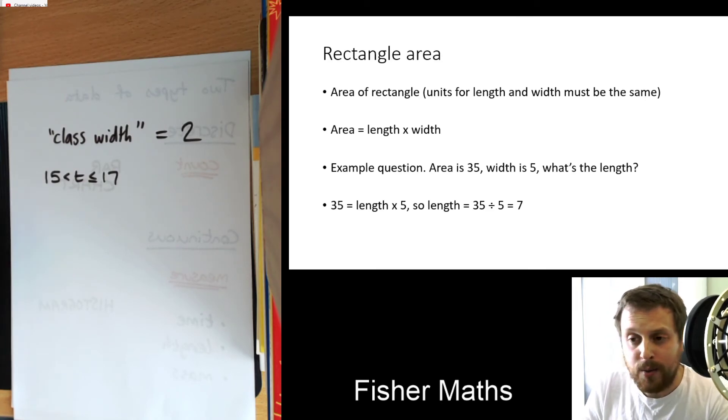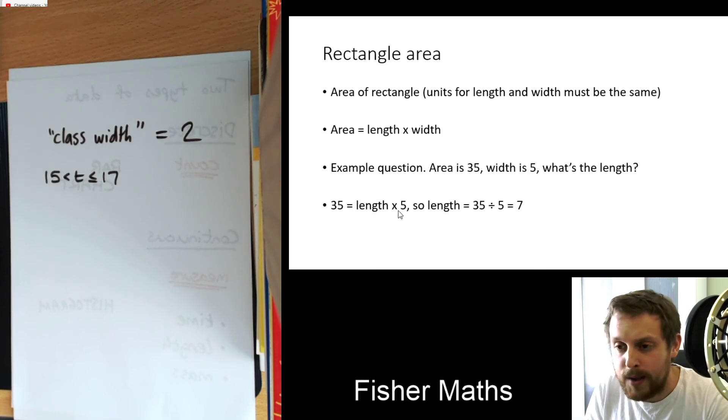So in this situation, you know, it would have been 35 is however long it is times 5. Right? That's this little formula here with the 35 substituted and the 5 substituted. Now, if you have an equation like this, you would divide both sides by 5, which of course gives you the answer of 7.